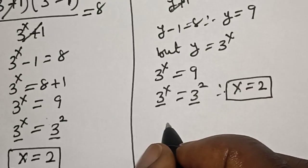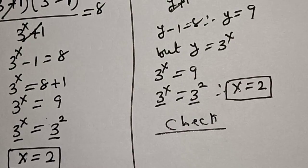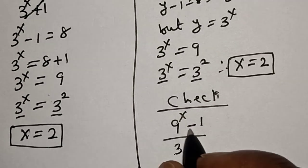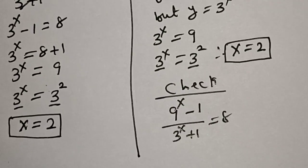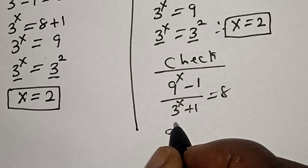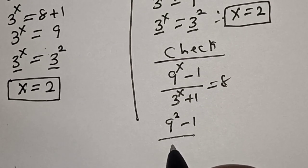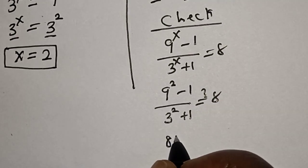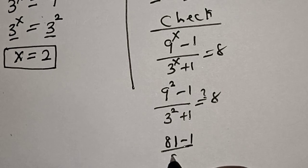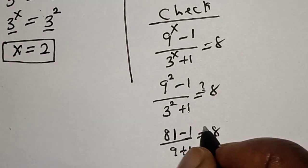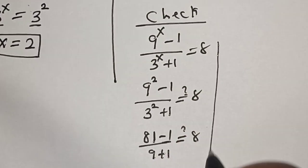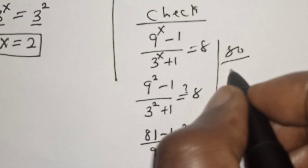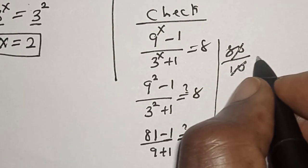Now let's check to confirm if our answer is right or wrong. We have the given equation: 9 raised to power x minus 1 divided by 3 raised to power x plus 1 is equal to 8. At x equal to 2, we have 9 squared minus 1 divided by 3 squared plus 1 is equal to 8. Now 9 squared is 81, minus 1 over 3 squared plus 1, which is 9 plus 1.